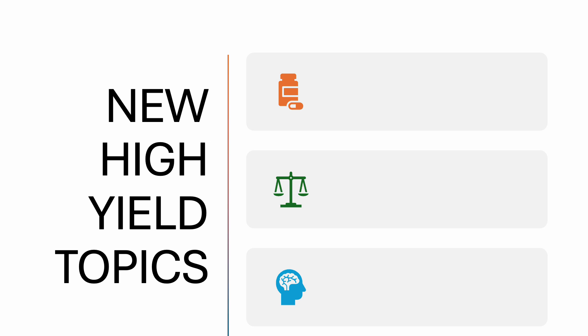The first thing I want you to be aware of are the new high-yield topics you really need to focus on from the start of prep. Since with Step 2 there's no real dedicated period, you need to start focusing on these from the beginning — I was actually a little surprised at how common they are on my test. The first is medical errors. You need to know these cold. You can use AMBOSS articles for that — they're amazing — and UWorld may have a table for that as part of question explanations.